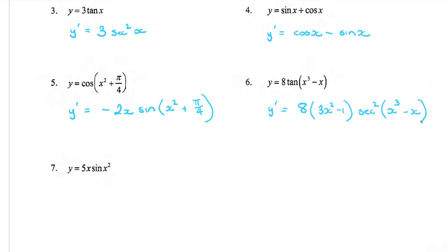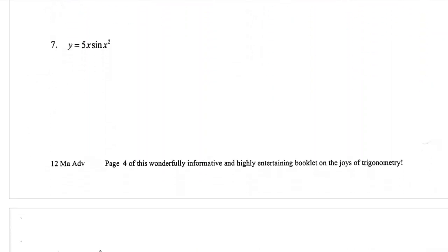For question 6, tan changes to sec squared of the original function (x³ − x), and the derivative of that function is 3x² − 1. So y' equals 8(3x² − 1) sec squared of (x³ − x). It gets messier but just follow the formula. Question 7: y equals 5x · sine of x². Alarm — product rule!